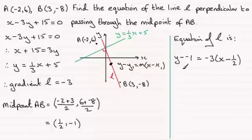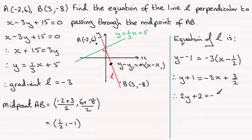So let's just clean this up. We've therefore got y + 1 = -3x + 3/2. Now we've got to get this in the form ax + by + c = 0. So I want to get rid of that fraction here. So I'm going to multiply throughout by 2. So therefore we get 2y + 2 = -6x + 3.